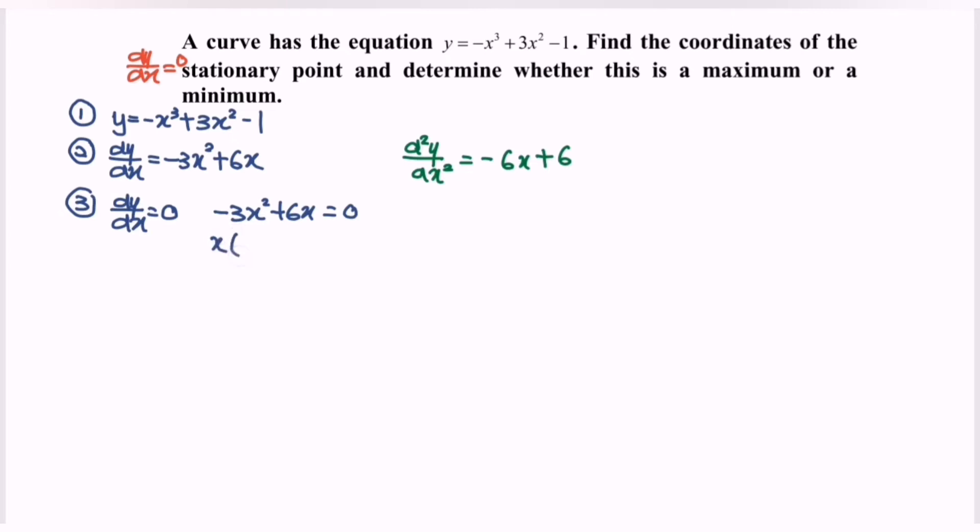x multiply with -3x + 6 equals to 0 where we will have the critical value x = 0, x = 2.